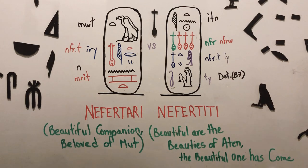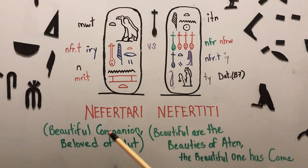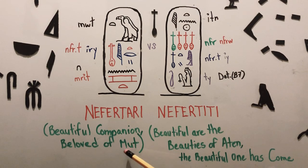So let's start by reading their names so you know what they mean. Nefertari means beautiful companion, beloved of Mut — the goddess Mut, the mother.